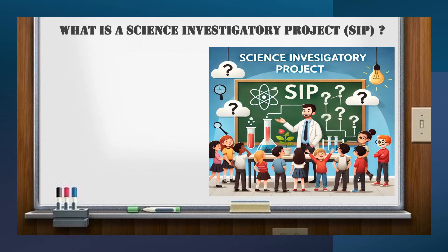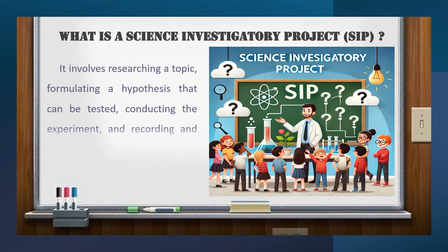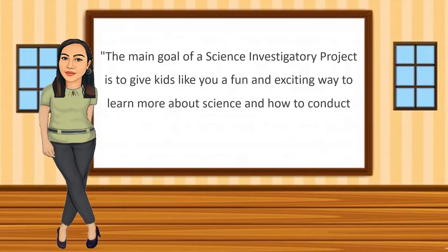What is a Science Investigatory Project? A Science Investigatory Project uses the scientific method to study and test an idea about how something works. It involves researching a topic, formulating a hypothesis that can be tested, conducting an experiment, and recording and reporting the results. The main goal of a Science Investigatory Project is to give kids like you a fun and exciting way to learn more about science and how to conduct experiments — similar to the steps used even by college students when they study science.